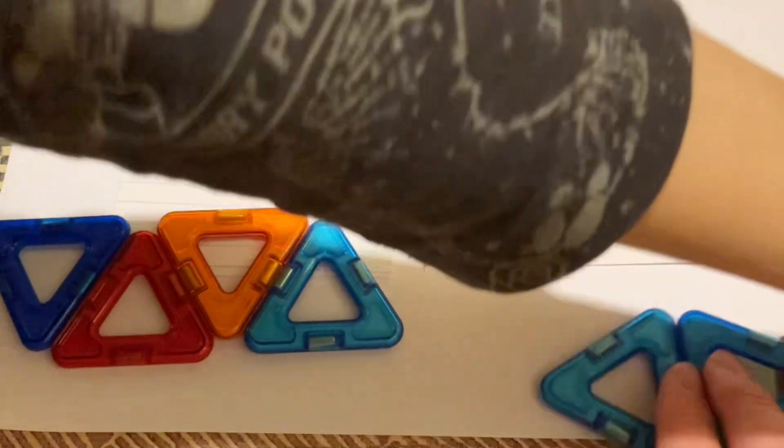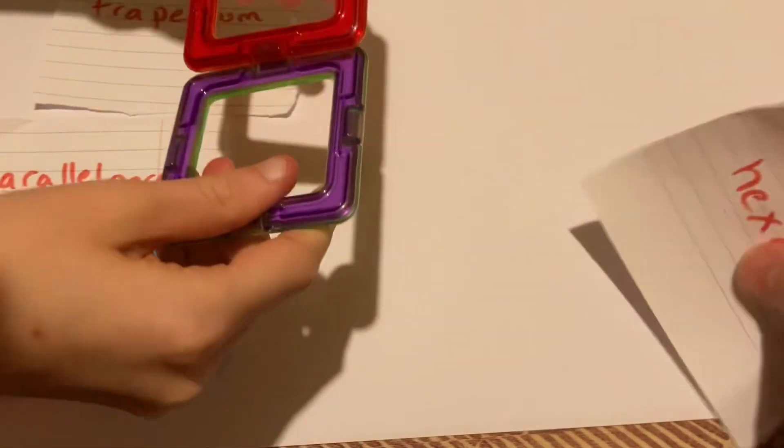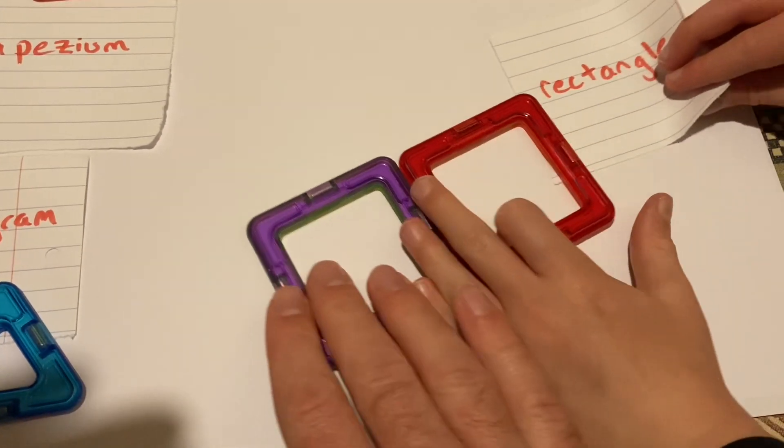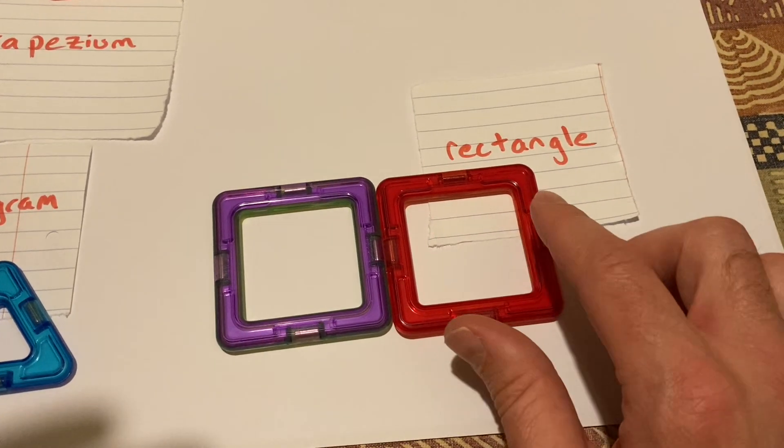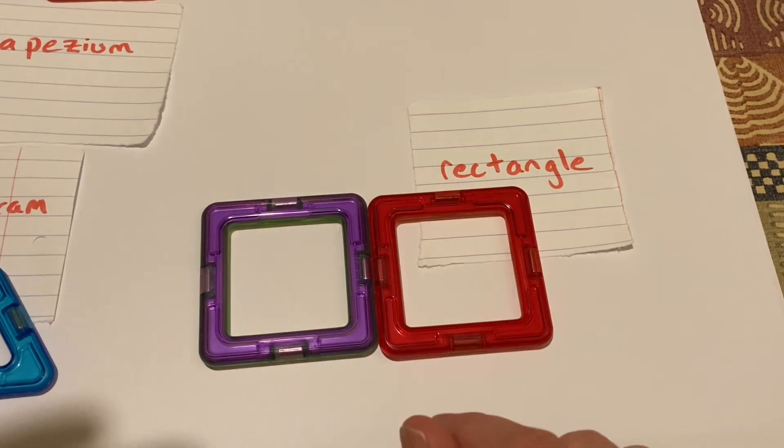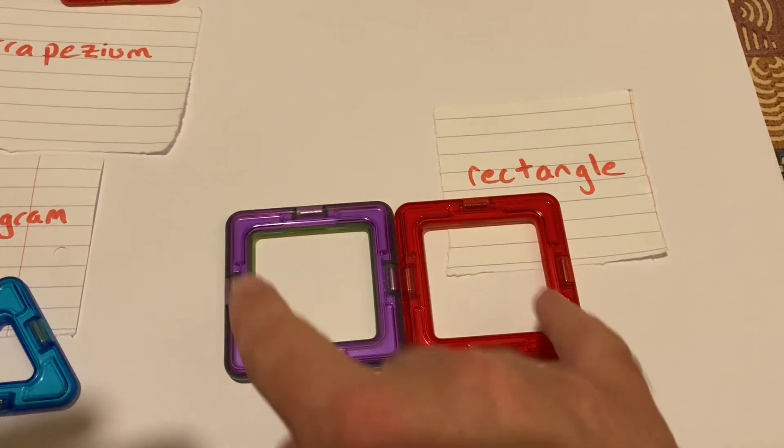And speaking of rectangles, there's also rectangles. So let's see a rectangle then, please. So you've got another four-sided shape with right angles and parallel sides and two pairs of equal lengths.